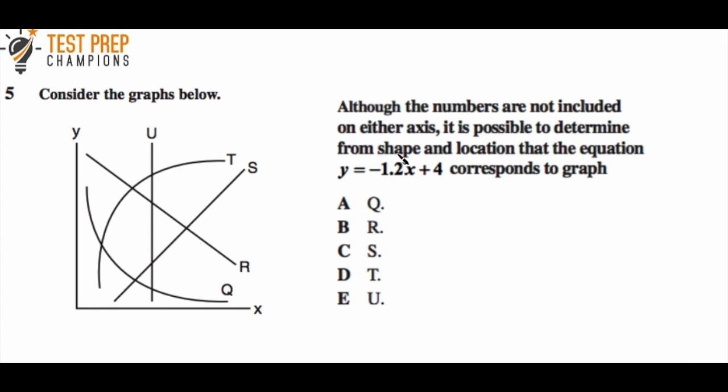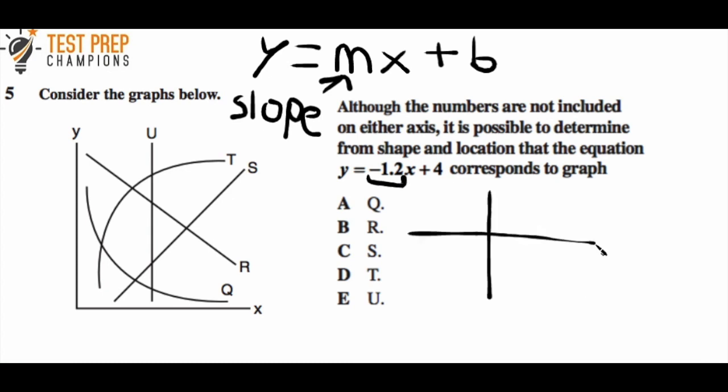This is a really important question. First, you need to understand: Y = MX + B. The M value represents the slope, and B represents the Y-intercept. In the equation Y = -1.2X + 4, the slope is -1.2. Second, you need to know what a negative slope looks like on a graph. A negative slope starts high and goes low. On the other hand, a positive slope starts low and goes high.